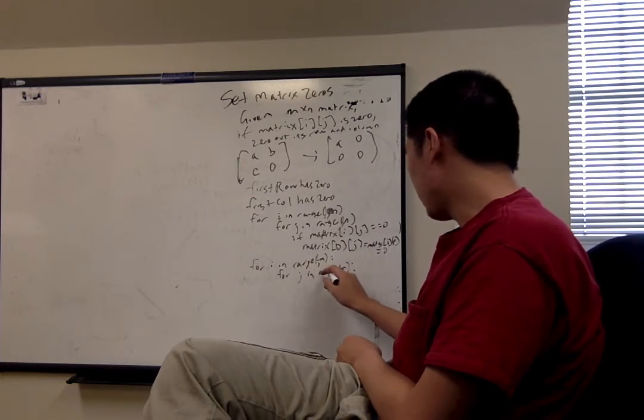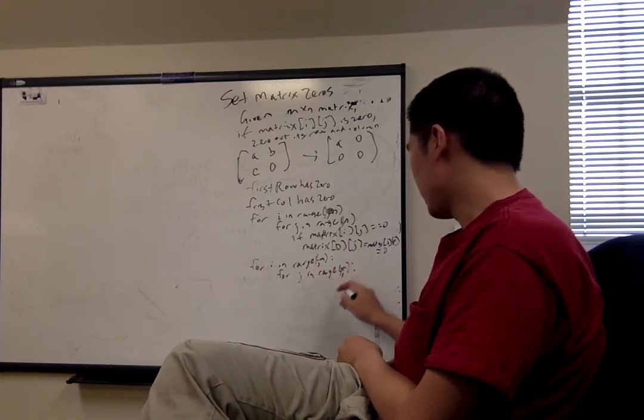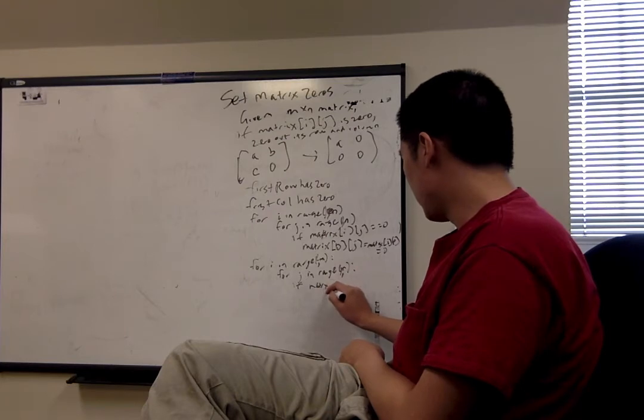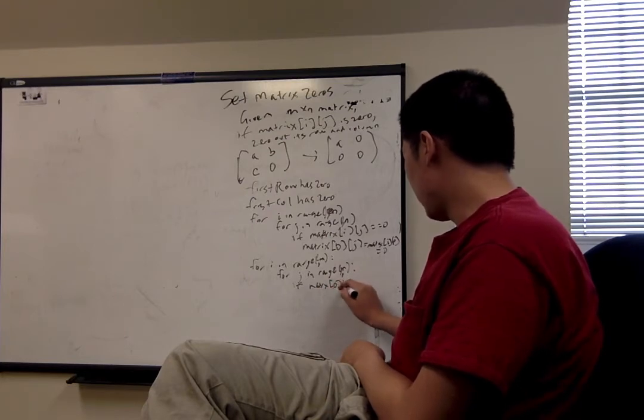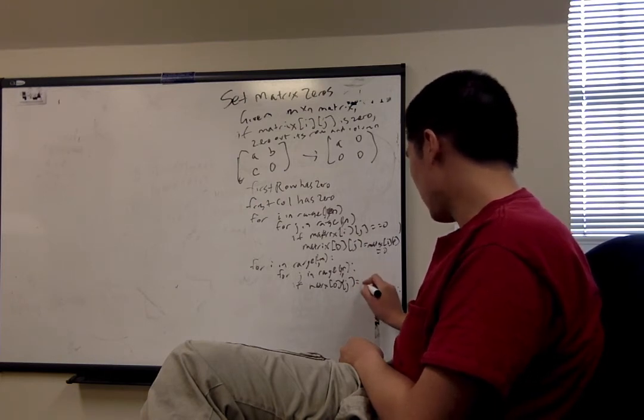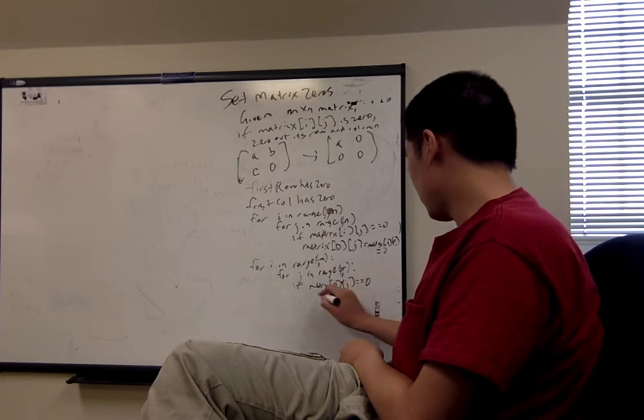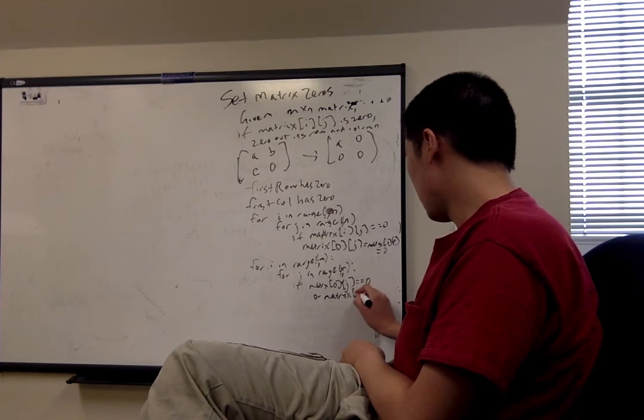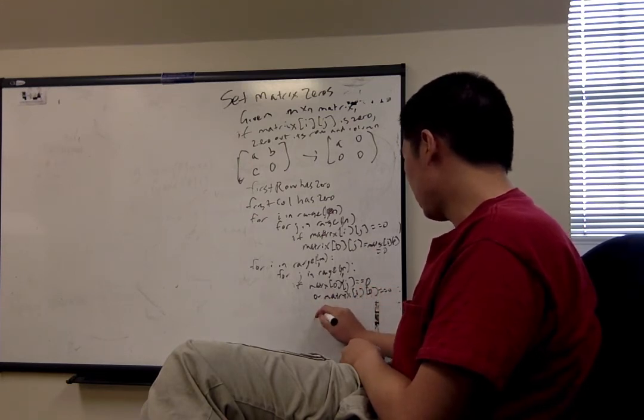So for i in range(1, m), for j in range(1, n), we're going to check if either of these is true—if the first row or column of the corresponding element has zero in it, then we want to set that element to zero.